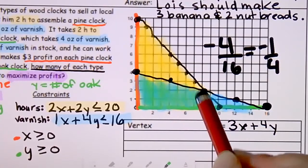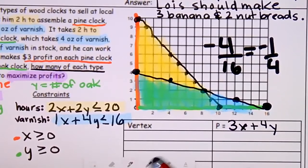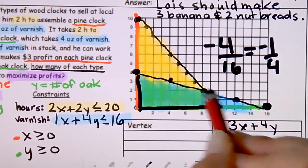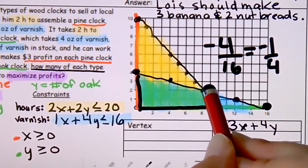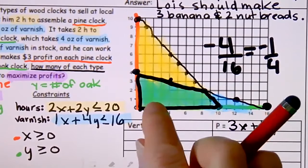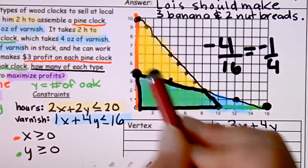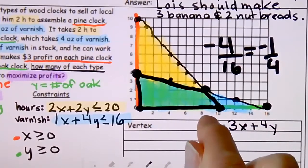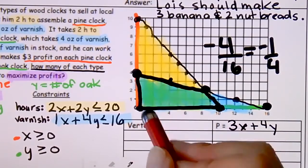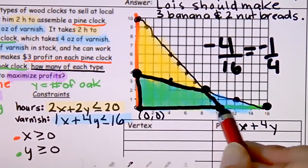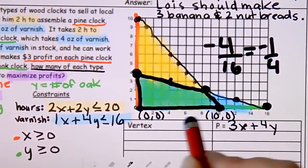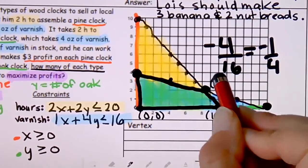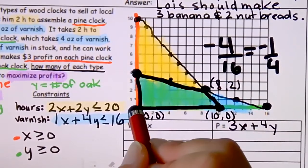This overlapping area is our feasible region. It has four vertices: (0,0), (10,0), (8,2), and (0,4). I'll write those down and substitute them into the objective function.